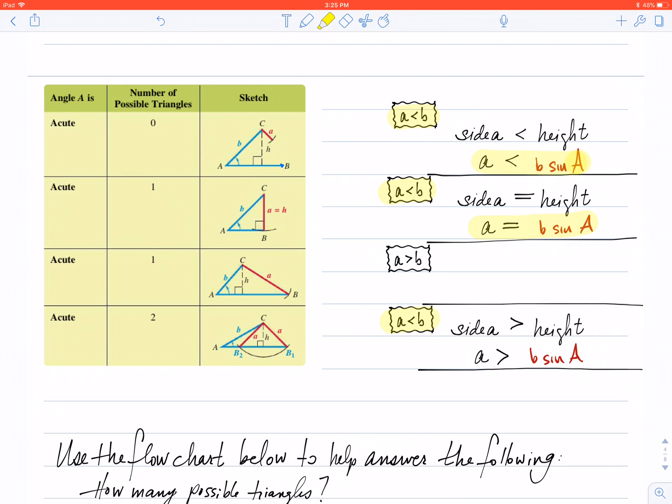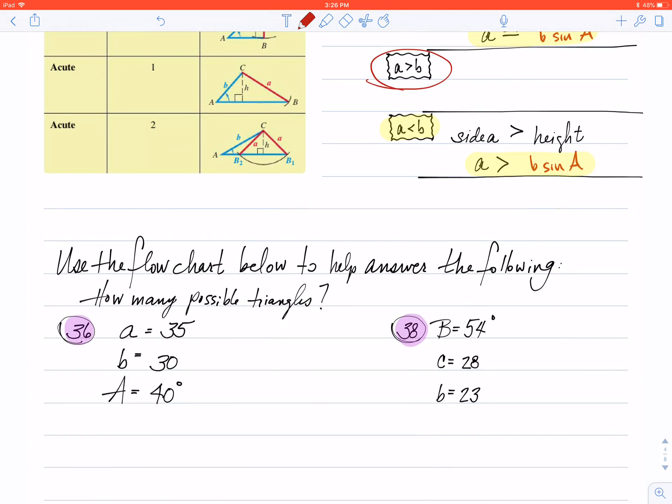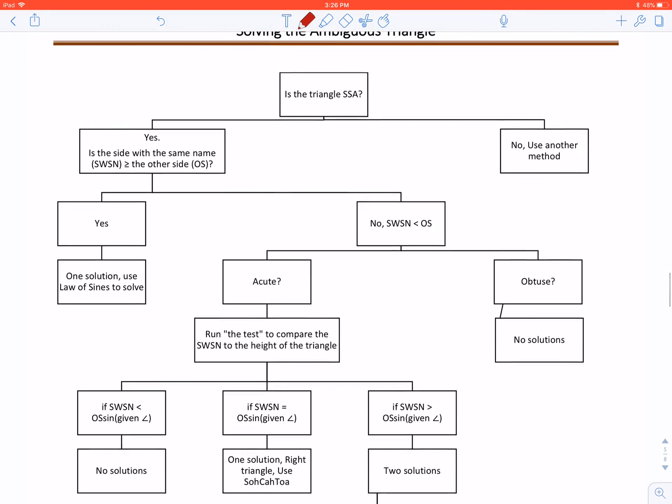If I have that side a is greater than b sin A, and in this case, I'm going to have two solutions. I can make two triangles out of this. But heavens, if I simply have that side a is greater than side b, there's going to be one solution and I don't have to run any tests at all for this. Now I keep mentioning these tests. These are all going to go back to the flow chart that I have included for you in your notes.